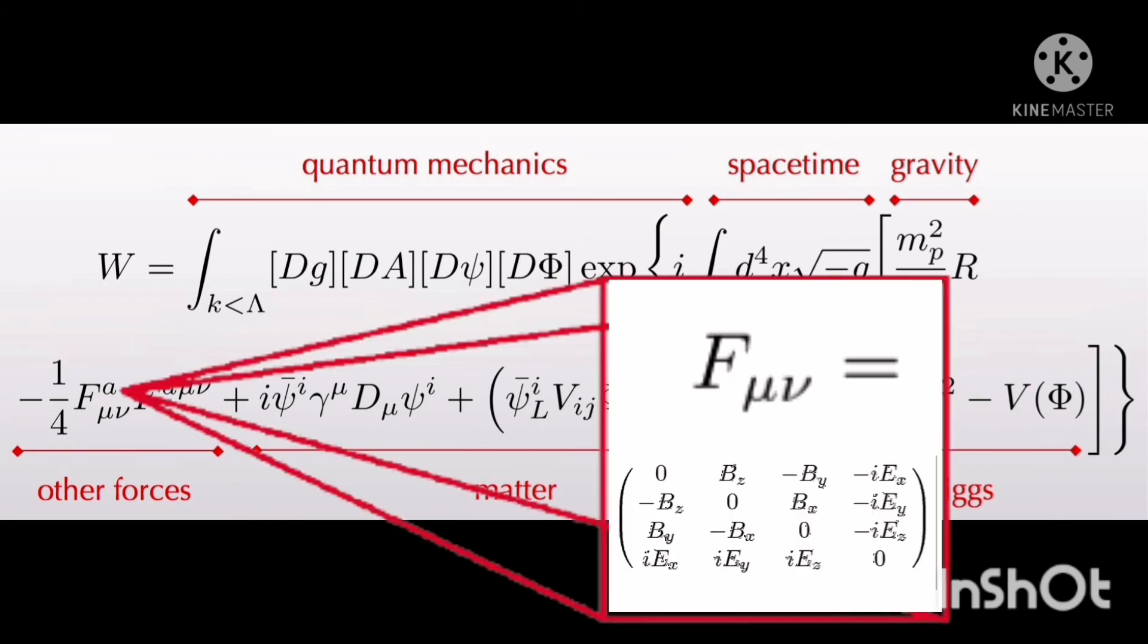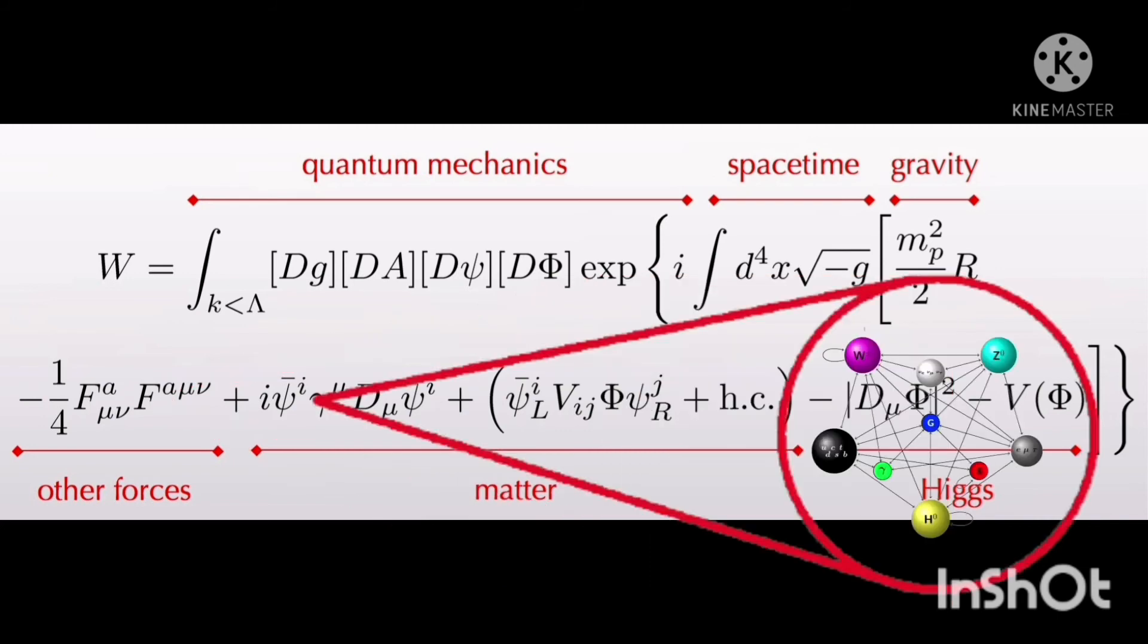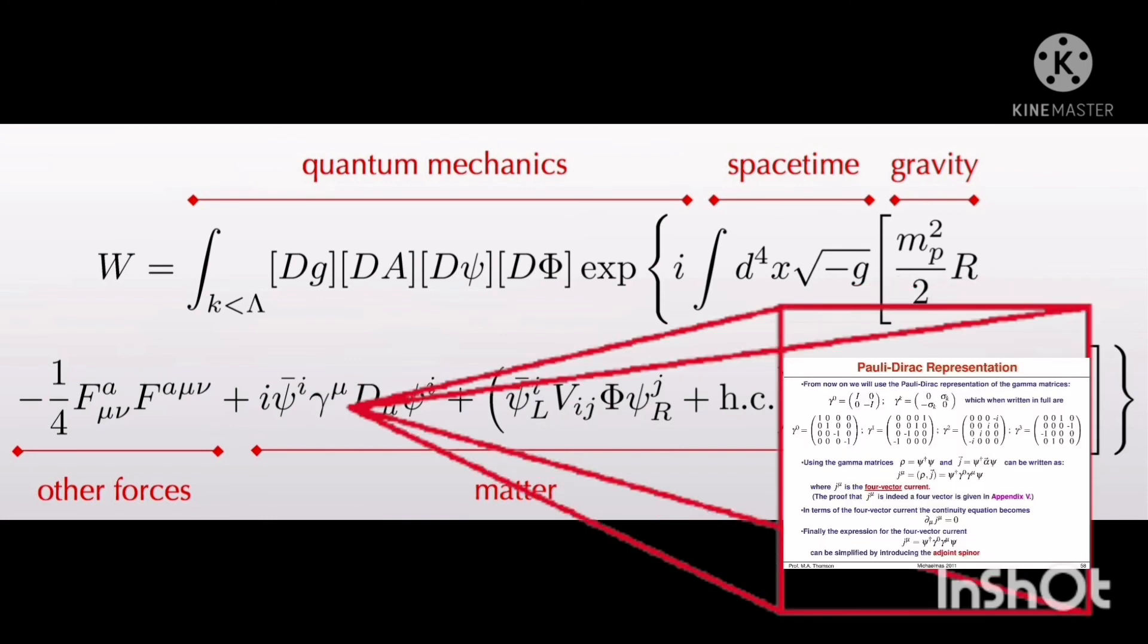F is basically the field strength tensor. Psi represents fermions and lambda represents Dirac matrices, which basically quantifies the particle antiparticle behavior in fermions.